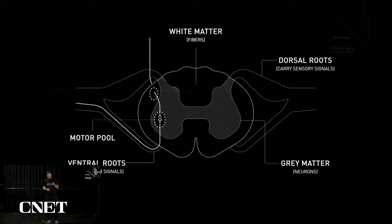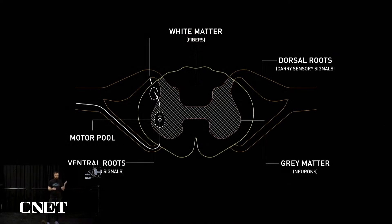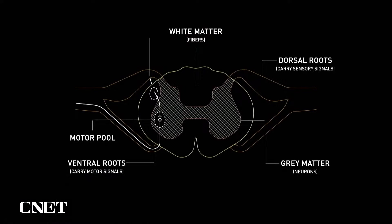Here you can see on the left a cross-section of the spinal cord with a fiber coming down schematically. This travels through the white matter tracks — this is the upper motor neuron. Then it synapses within this butterfly-shaped region of gray matter in what's known as a motor pool. The lower motor neuron descends out the ventral roots to the muscles, which contract. The sensory consequences of those movements — for example, the touch of your hand against an object — return to the spinal cord through the dorsal roots and ascend up into the sensory regions of the brain. Again, in spinal cord injury, this connection is severed.